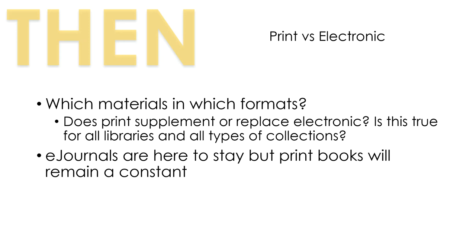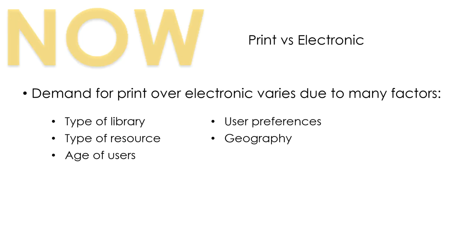In the past, we've debated the role of electronic resources — should they supplement the print collection or replace it? We've grappled with this across different types of libraries, and the answer has always been different, depending on the needs of the users and the nature of the collection. For a long time, we've predicted that e-journals will win out over print journals, but that books are here to stay. We're still seeing varied demand for print and electronic resources, influenced by factors like the type of library, the type of resource, the age of the users, user preferences and geography.